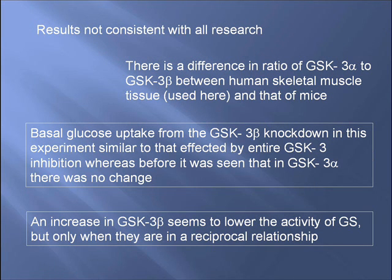The results aren't consistent with all available research, most notably research conducted in other species, usually mice. Mice have a much higher proportion of GSK3 beta compared to GSK3 alpha, up to 80%, whereas only between 50% and 60% in humans is the beta isoform. Although results are still compared against mouse data in the analysis, this is taken into account.